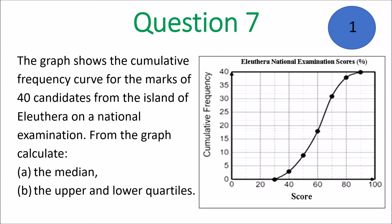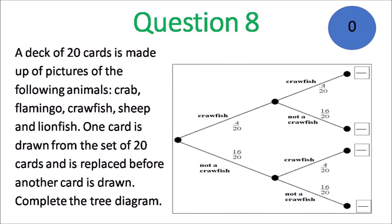We move on to question 8. A deck of 20 cards is made up of pictures of the following animals: crab, flamingo, crawfish, sheep, and lionfish. One card is drawn from the set of 20 cards and is replaced before another card is drawn. Complete the tree diagram.